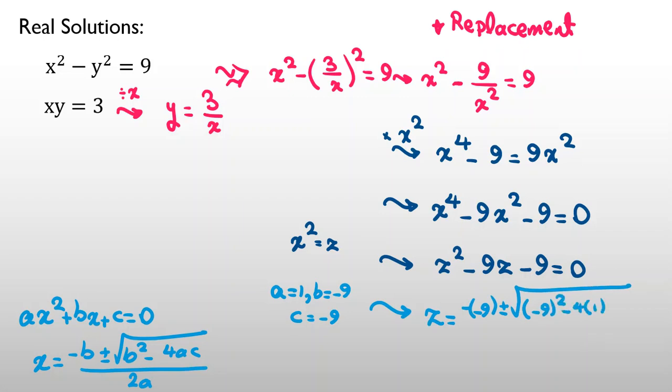plus minus square root of b squared, negative 9 squared minus 4ac, which is 4 times 1, times negative 9, all over 2a, which is 2 times 1. So, let's calculate this z. z is, let me write it here.